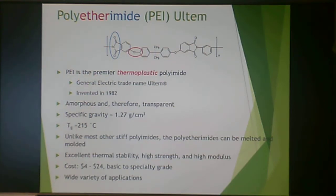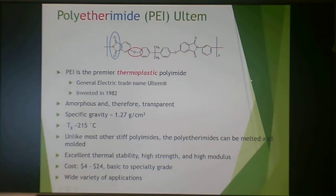Here is a color-coded slide. It's called polyetherimide because it has an ether group, shown here in red, and an imide group, shown here in blue. This is the Ultem type — the premier thermoplastic polyimide, produced by General Electric under the name Ultem. It was invented in 1982. Since I was alive in 1982, I consider this to be a really young and vibrant thermoplastic, but that's just to make myself feel better about my advanced age.